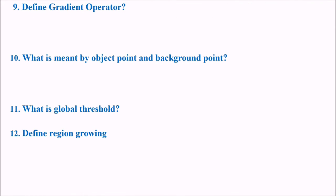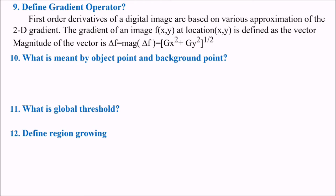Define the gradient operator. What is a gradient operator? First order derivative of a digital image are based on various approximation of the 2D gradient. So the gradient of an image f(x,y) at location (x,y) can be defined as the vector magnitude of the vector which is delta f. The magnitude of delta f, which is the gradient, is given by gx square plus gy square.